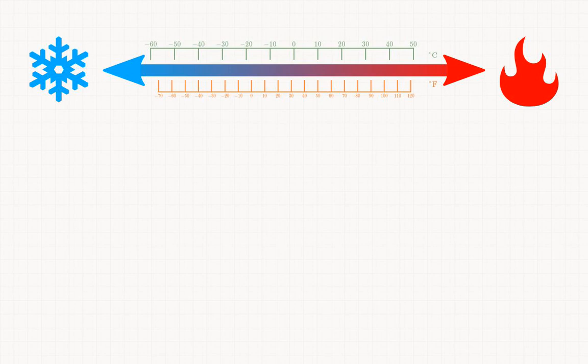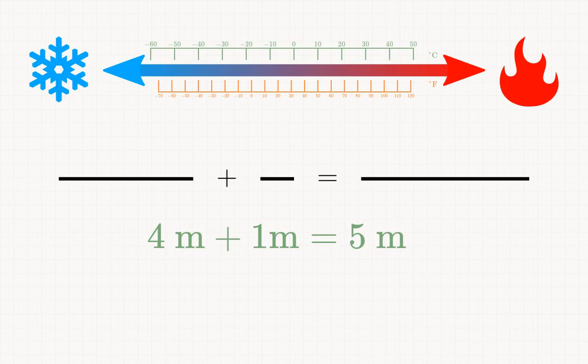Or getting back to lengths in space, which is going to be our main focus. If we have this length plus this length equals this length, we might write 4 meters plus 1 meter equals 5 meters to describe this. Or we might write 13.1 feet plus 3.3 feet equals 16.4 feet. So we have two different equations with different numbers in them, but they're describing the same situation.